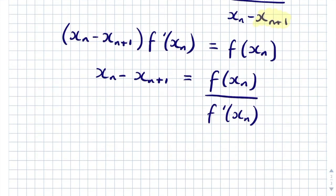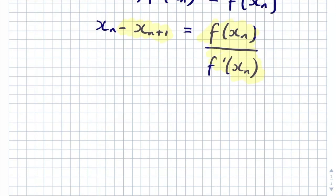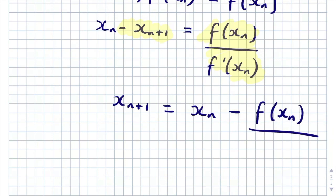We want x_{n+1} as the subject, so we subtract this term from both sides and rearrange. By doing that we get x_{n+1} equals x_n minus f(x_n) all over f'(x_n). That completes the derivation of the Newton-Raphson formula.